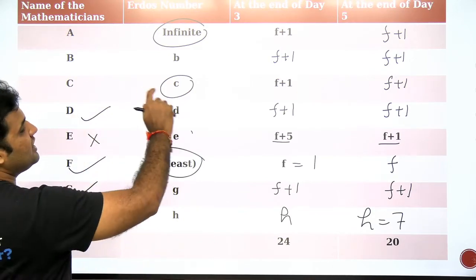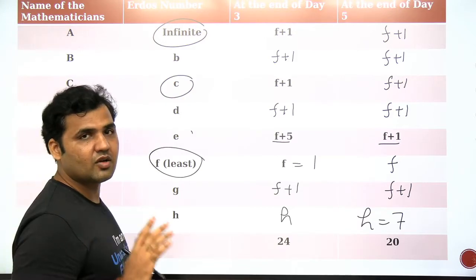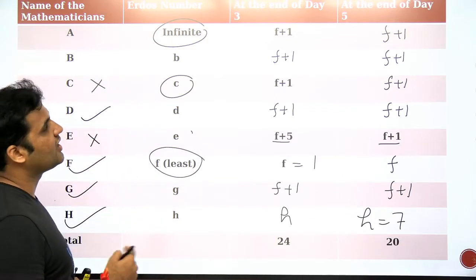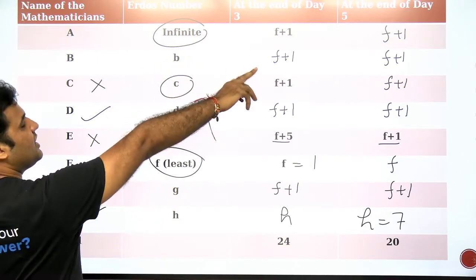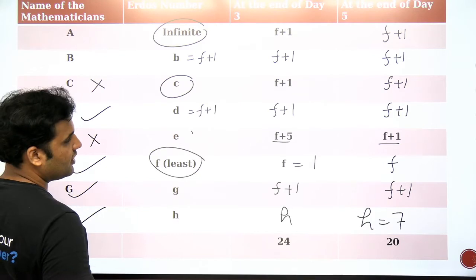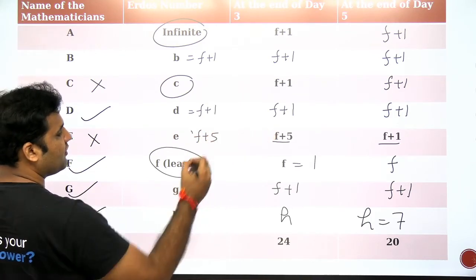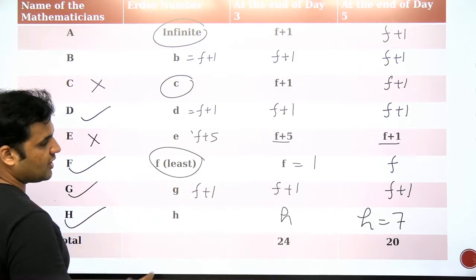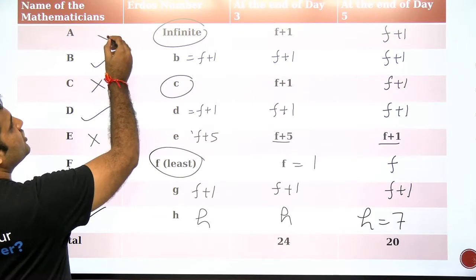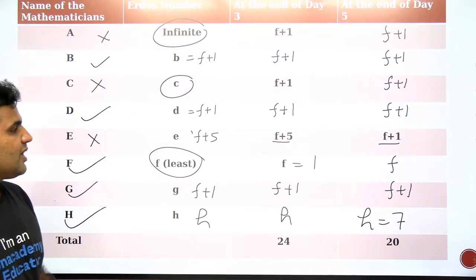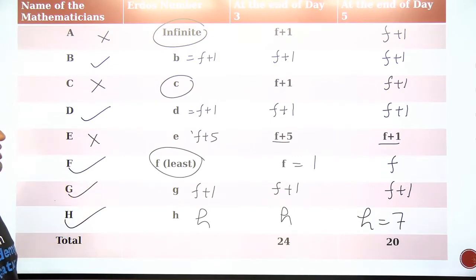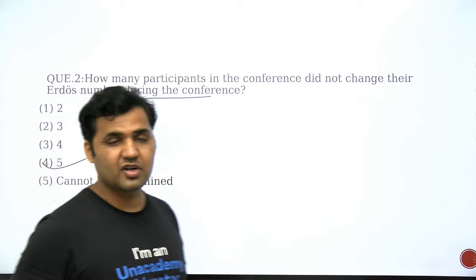D's Erdos number didn't change, so we include D in the answer. C's Erdos number changed due to the co-authorship on the third day, so C is not counted. B ne koi co-authorship nahi kiya — B ka Erdos number F+1 tha pehle bhi F+1 hi hoga. D ka bhi F+1 tha, pehle bhi F+1. E ka F+5 tha, G ka F+1 tha, H ka H hi raha. A's Erdos number changed because of the co-authorship on the third day. So how many members are there whose Erdos number did not change? One, two, three, four, five — there are five such members. Therefore, the answer to the question is option 4, that is five.